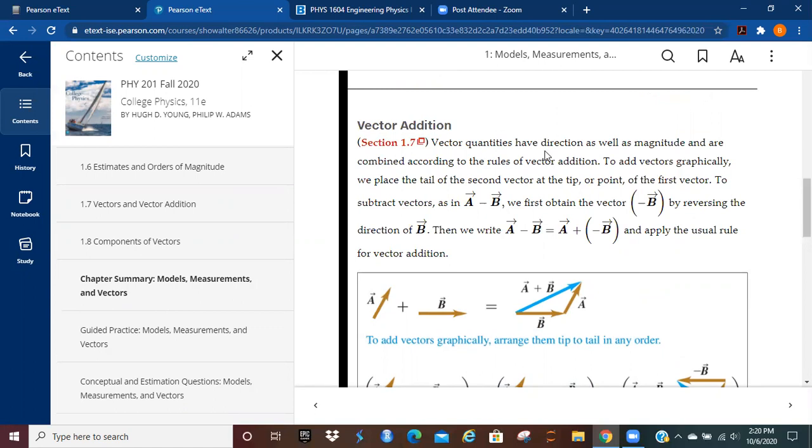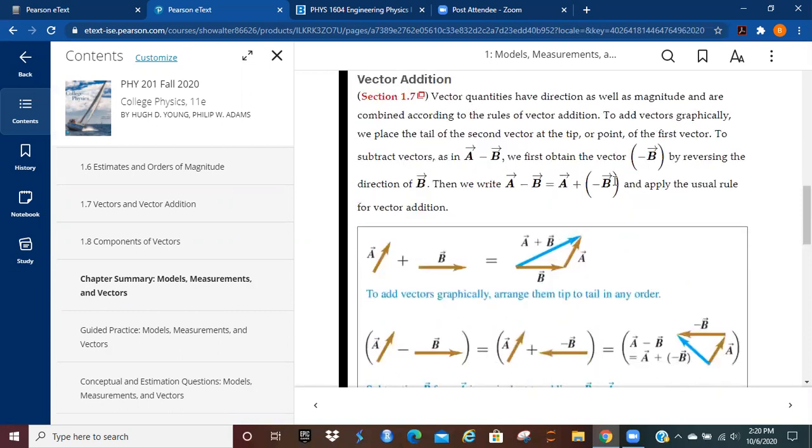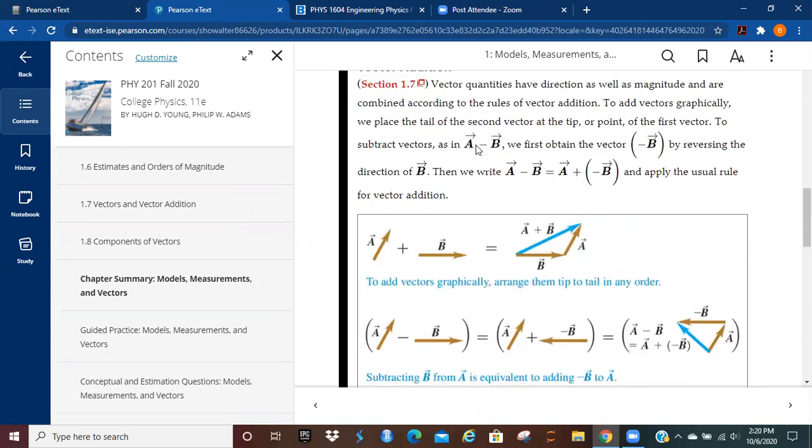Vector addition. Vector quantities have direction as well as magnitude and are combined according to the rules of vector addition. When you add vectors graphically, we're going to place the tail of the second vector at the tip or point of the first vector. And to subtract, we first obtain the vector minus B by reversing the direction of B. And then we're going to write A minus B is equal to A plus minus B.